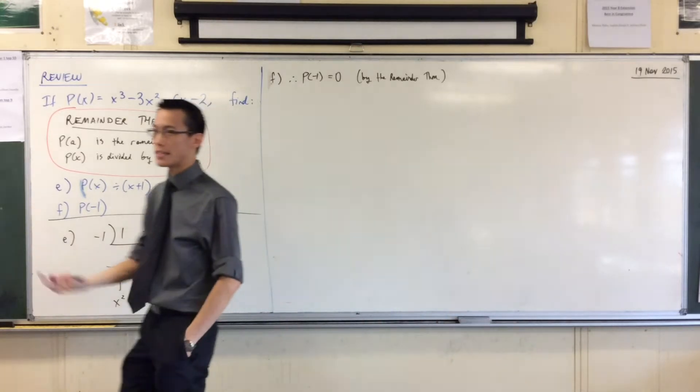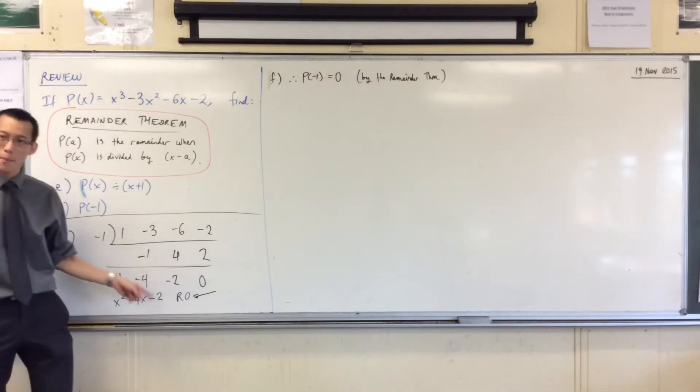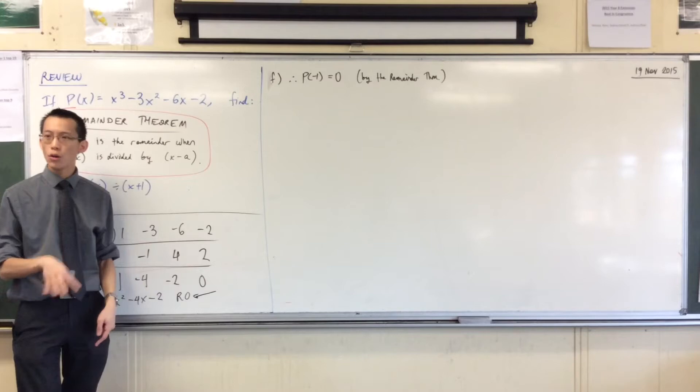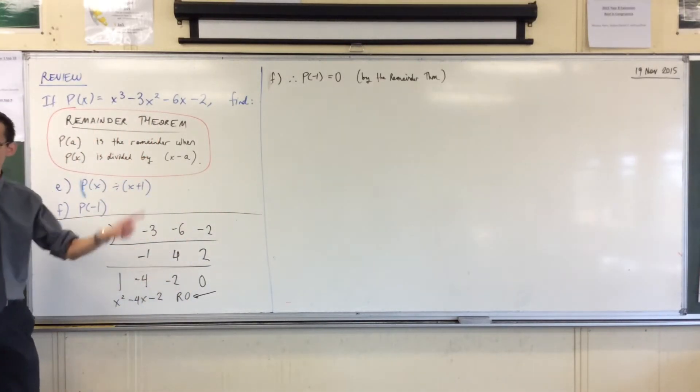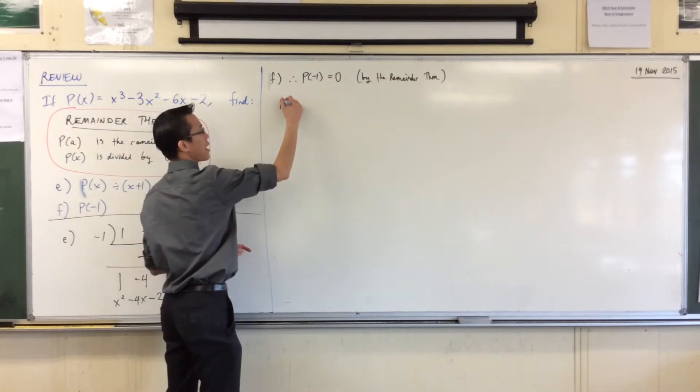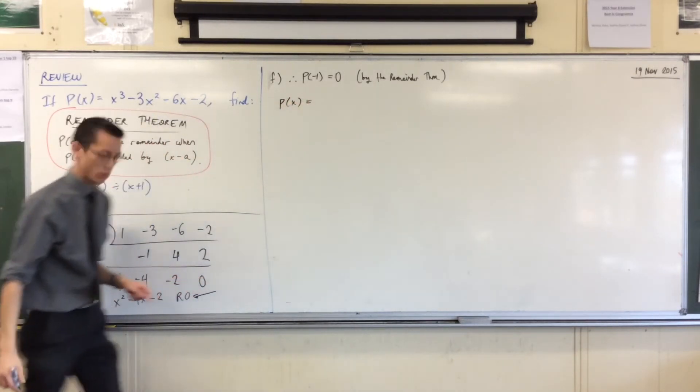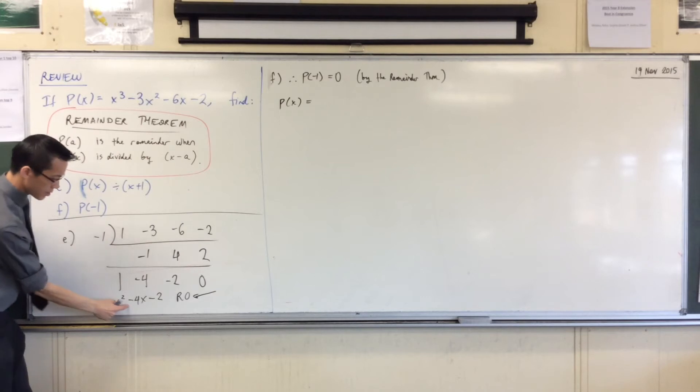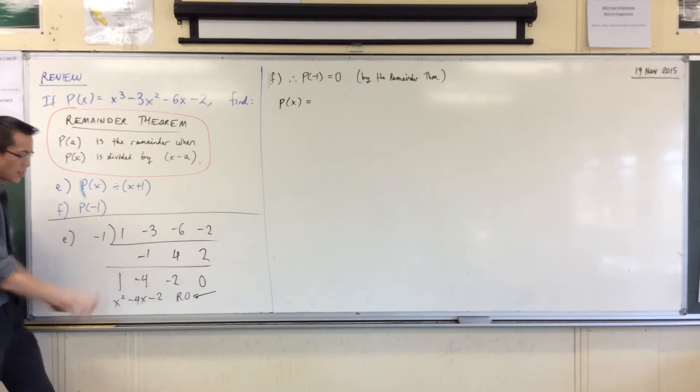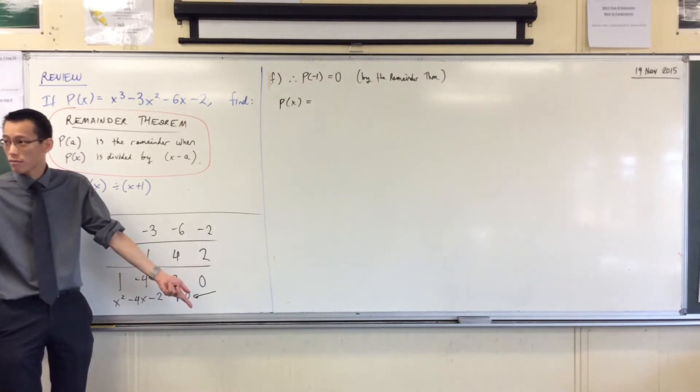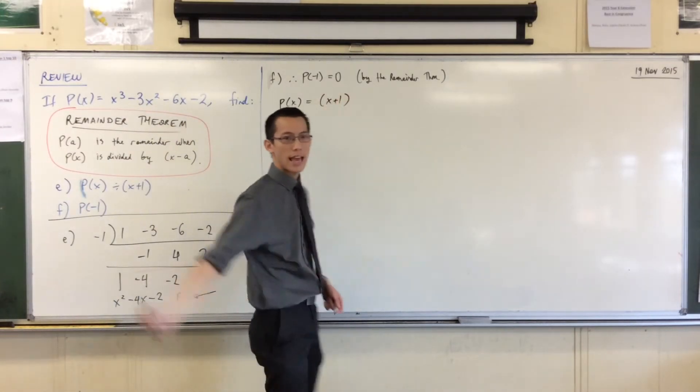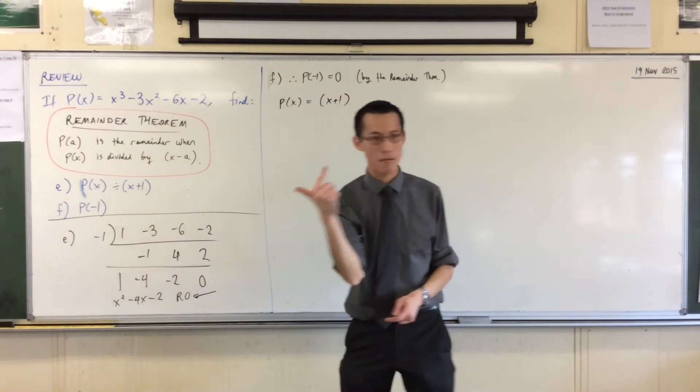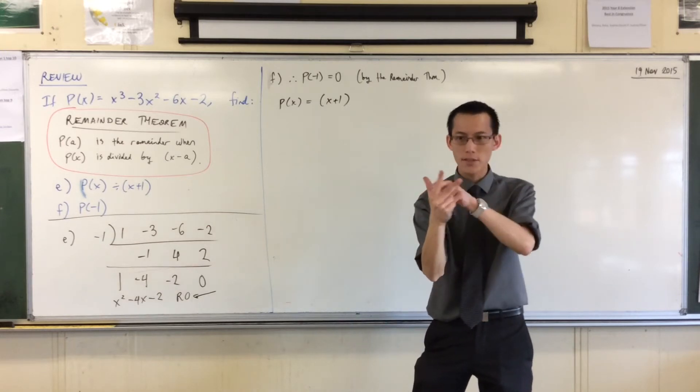Now what does this mean though? This is a special case when the remainder is 0. We no longer just call them quotient and remainder. Let's rewrite our statement. We're saying P of x is equal to this times this plus that plus 0. So therefore what I've got is in fact not just a divisor quotient remainder.